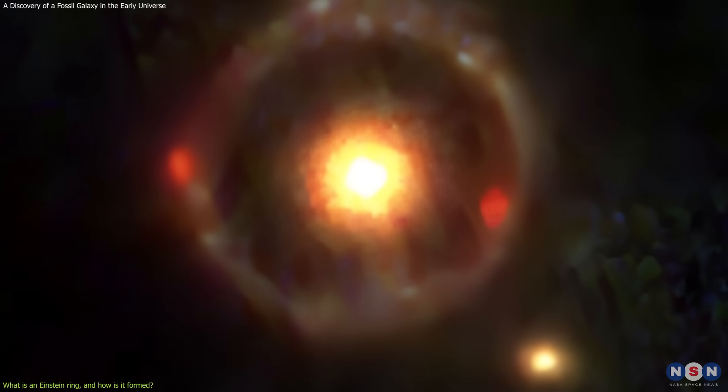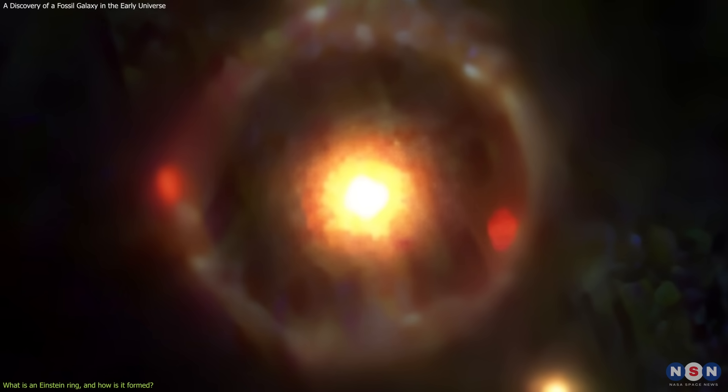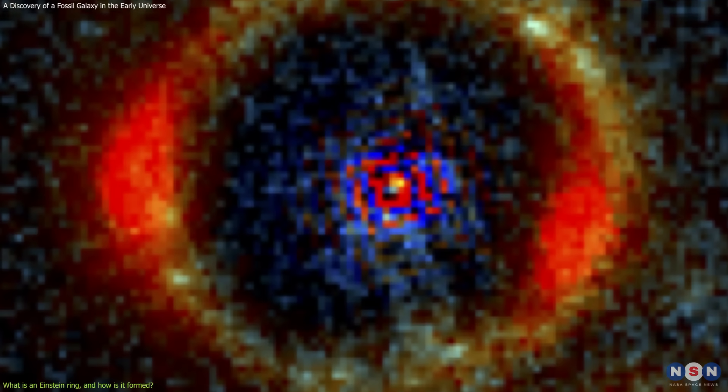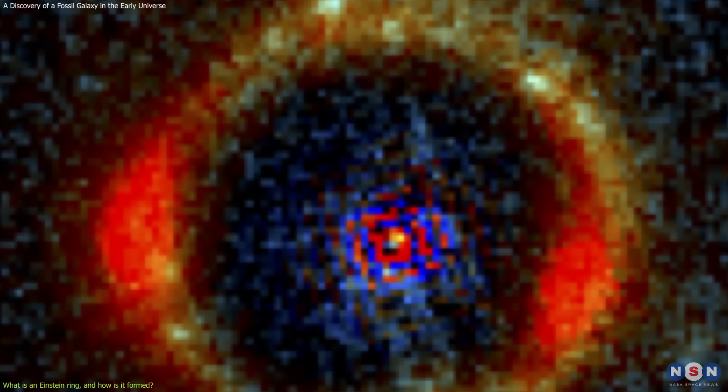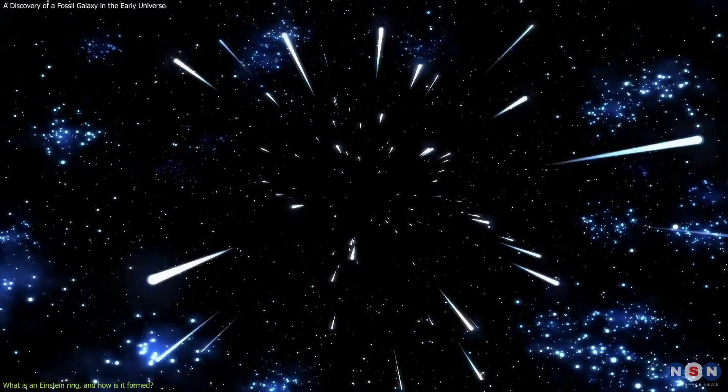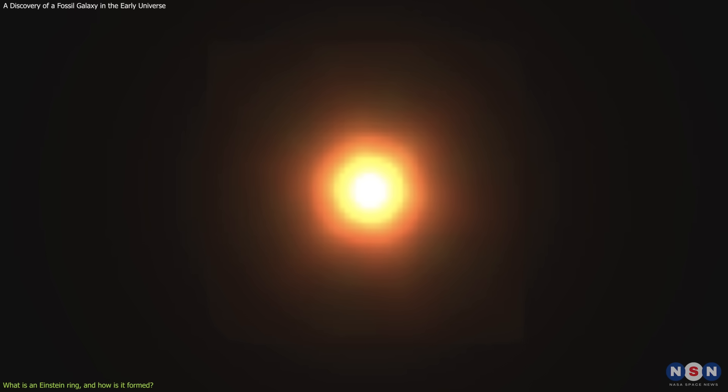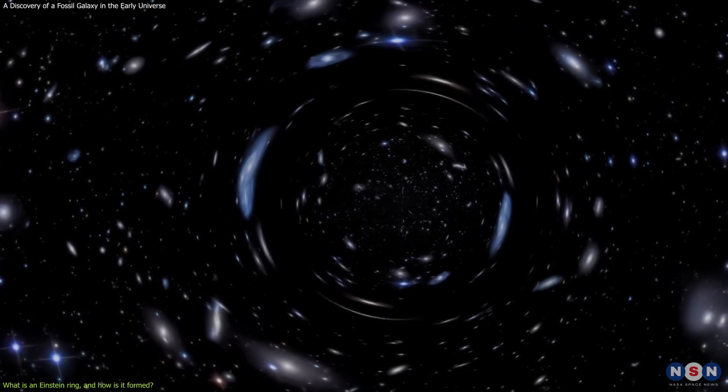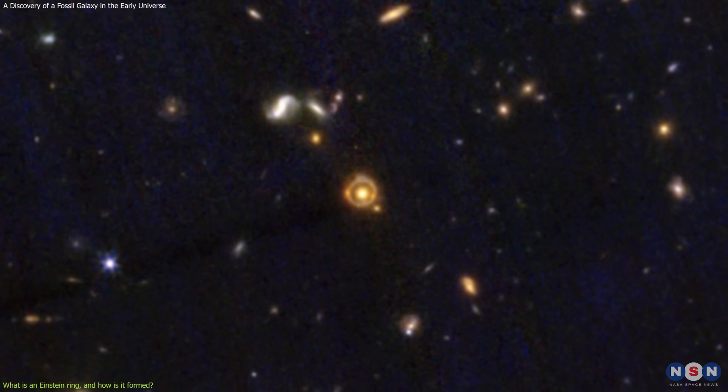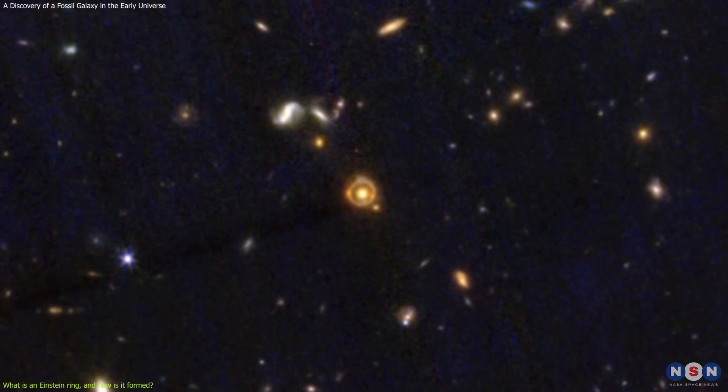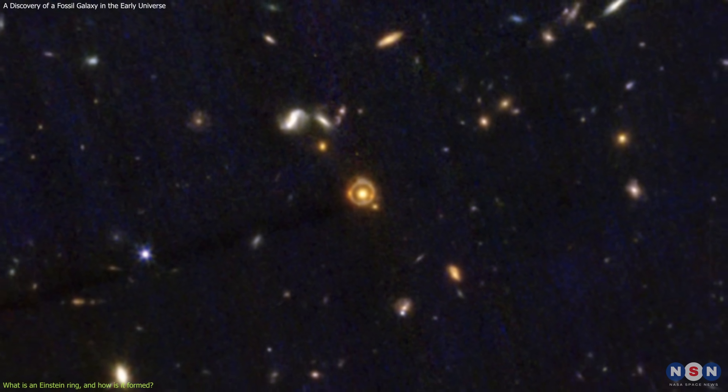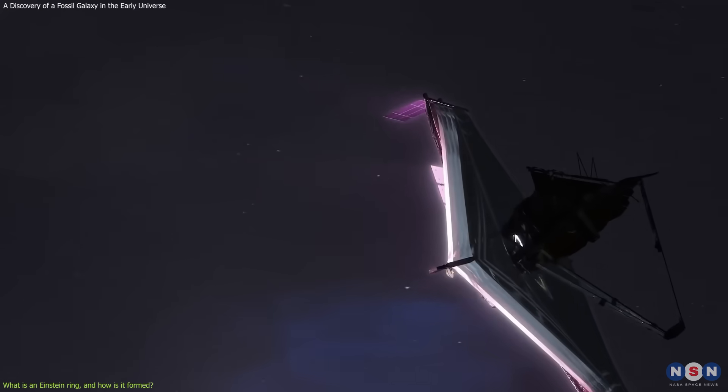However, the observed Einstein ring in this case that surrounds the massive and compact quiescent galaxy is one of the most complete and symmetric ever observed. It has a diameter of about 4 arc seconds, which corresponds to about 20,000 light years at the distance of the lens galaxy. It is also very bright, with a total magnification of about 40 times. This means that without the gravitational lensing effect, we would not be able to see the quiescent galaxy at all, as it would be too faint and too small for the James Webb or any other telescope to detect.